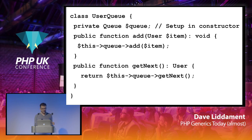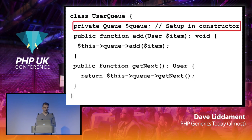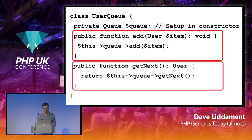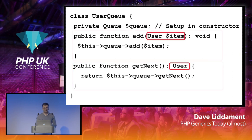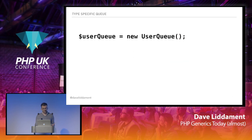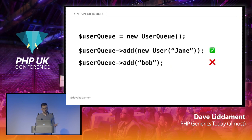There's another solution: we could make a specific UserQueue object. Behind the scenes it has the generic queue, and we've got our add and get-next methods. But importantly, we add type information to the add method parameter and the return type. We construct it like this: user_queue = new UserQueue. If you try to add a User, that's fine — but if you try to add something that wasn't a User, it would fail with a type error.